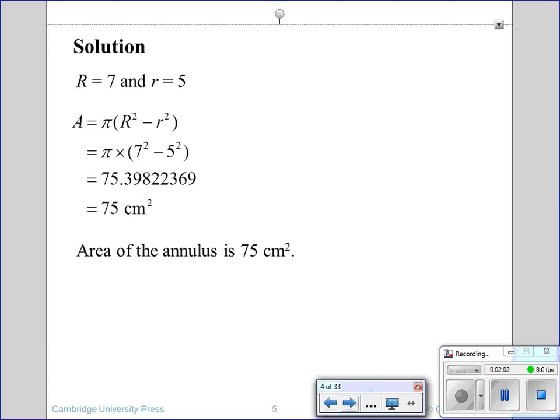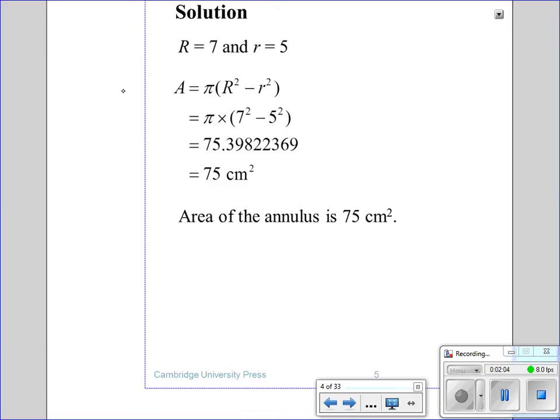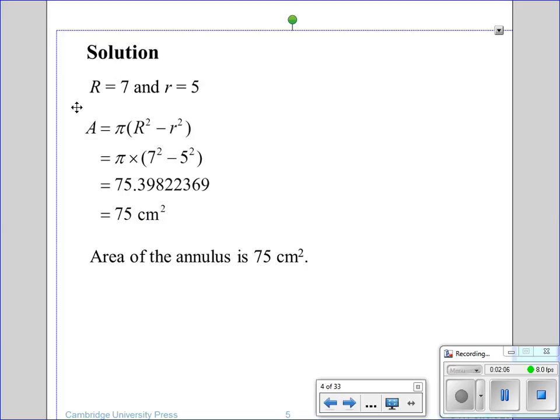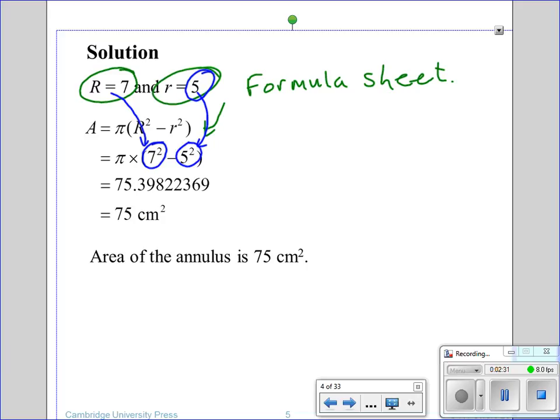We start off by writing out what we have. Whoops. Wrong colour. Wrong colour. What we have, then we write the formula on your formula sheet. Once we know it's on the formula sheet, write down the formula, make the substitution. Here's my 7, here's my 5, chuck them both in, square them both. So, again,